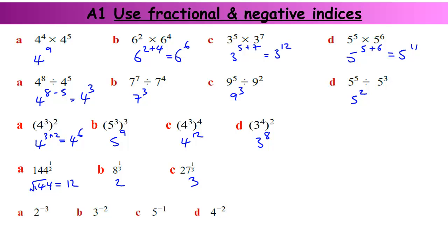The minus powers — it's just 1 over the normal power. 2 cubed is 8, so 2 to the minus 3 simplified would be 1 over 8. 3 to the power of minus 2 is 1 over 3 squared, which is 1 over 9. 5 to the power of minus 1 is 1 over 5 to the power of 1, which is just 1 over 5. And 4 to the minus 2 is 1 over 4 squared, which is 1 over 16.